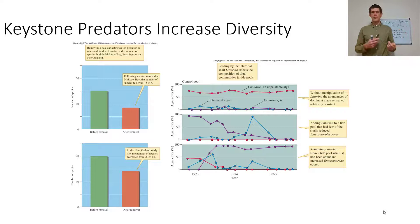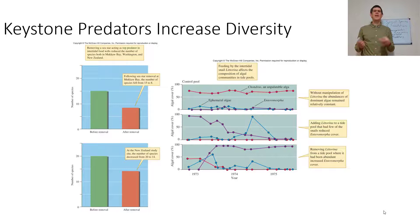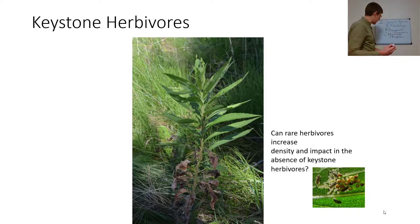Removing a sea star: the biodiversity is going to go down — before removal versus after removal, biodiversity decreases. Removing a keystone species is going to decrease diversity. Introducing a keystone species is going to increase diversity. There's also a possibility of keystone herbivores.